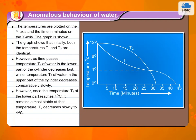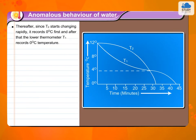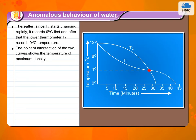Once the temperature T1 of the lower part reaches 4 degree Celsius, it remains almost stable at that temperature. T2 decreases slowly to 4 degree Celsius thereafter. Since T2 starts changing rapidly, it records 0 degree Celsius first, and after that the lower thermometer T1 records 0 degree Celsius. The point of intersection of the two curves shows the temperature of maximum density.